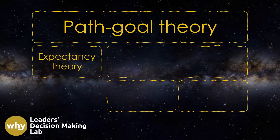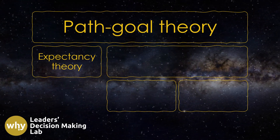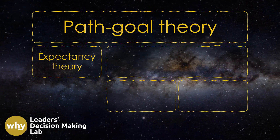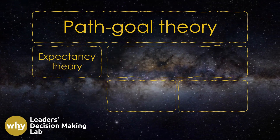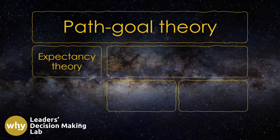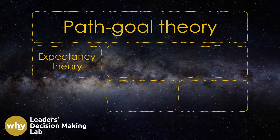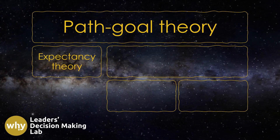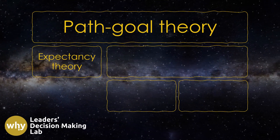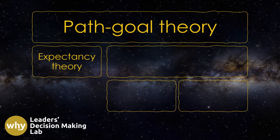One key aspect of Path-Goal Theory, as noted by Robert House, is its concern with the consequences of effective leadership behaviors for employee motivation. The theory incorporates several specific theories of work motivation to better understand the relationship between leadership and employee motivation.